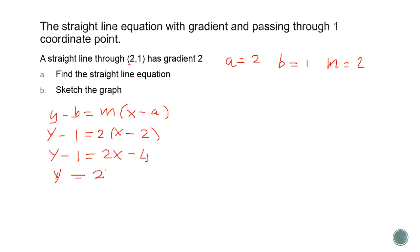Y equals 2x minus 4 plus 1, because negative 1 moves to the right side, becomes positive 1. And afterwards, y equals 2x minus 3.